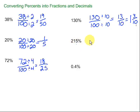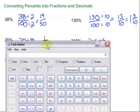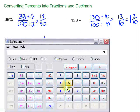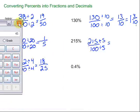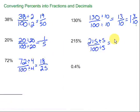215%. Same deal. The percent means out of 100. So 215 over 100. We can simplify that. Let's divide by 5 on the top and bottom. 215 divided by 5 will be... 43. And 100 divided by 5 is 20.